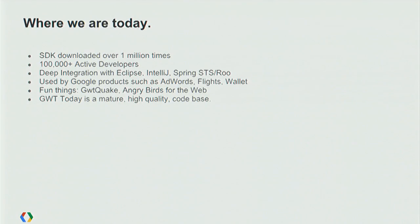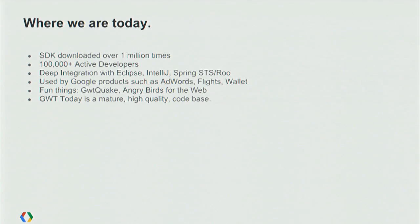So where are we today? The SDK has been downloaded over a million times, though that's probably undercounting because many people get it from Maven Central. We have over 100,000 monthly active developers based on Eclipse plugin update checks. We have deep integration with Eclipse, IntelliJ, and VMware's Spring tools. Our products are used widely within Google, including AdWords, Google Flights, Wallet, Offers, Google Groups, Blogger, and many others written in GWT.